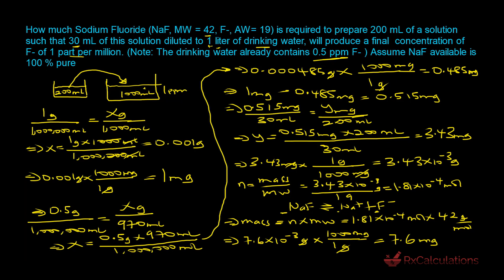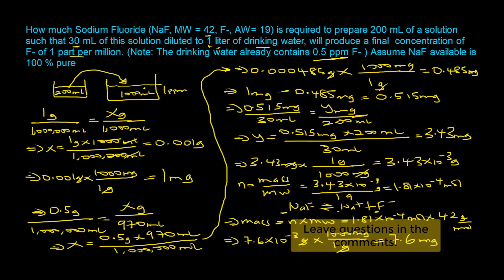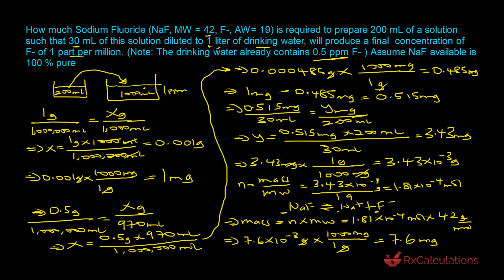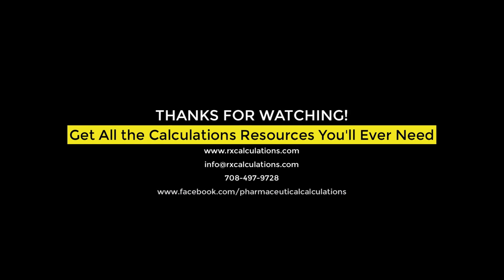So we need to take 7.6 mg of sodium fluoride to prepare the 200 mL stock solution. Then, taking 30 mL and diluting to one liter will yield 1 part per million fluoride. I hope you found this tutorial useful — if you did, be sure to like, share, and leave any questions in the comments. Subscribe and click the bell for more pharmaceutical calculations tips and strategies. Thank you for watching!